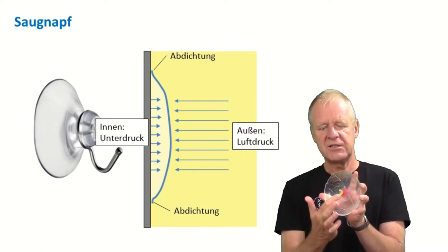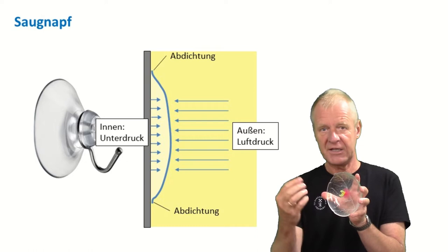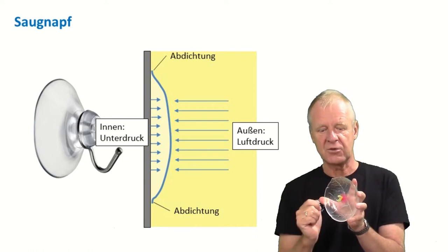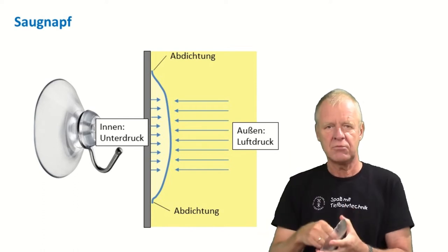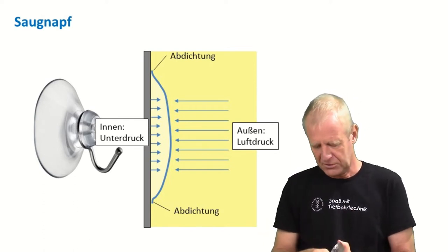As a result, the suction cup is pressed against the wall, it firmly sticks on it, and is not easily removed. So now you may wonder, what has this got to do with our drill string in the borehole?